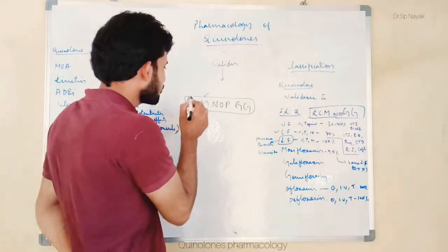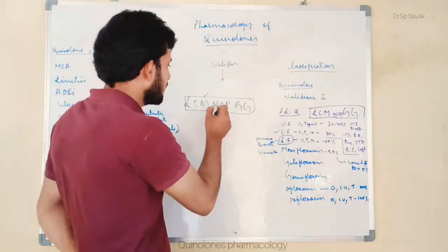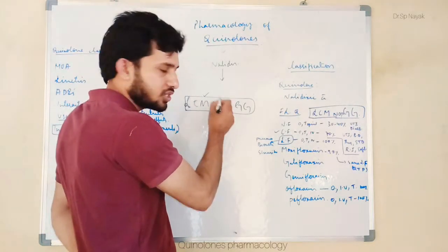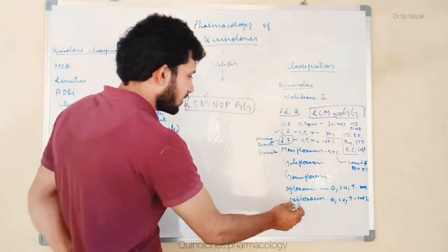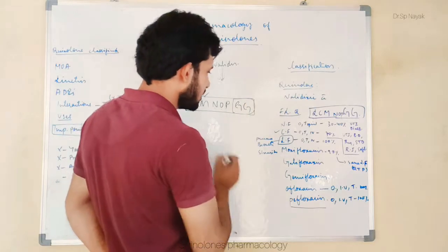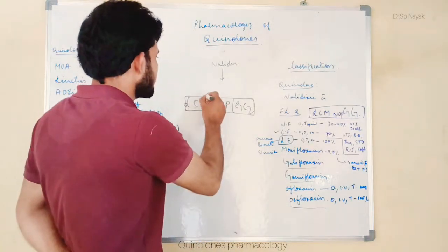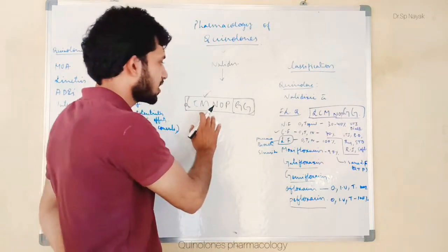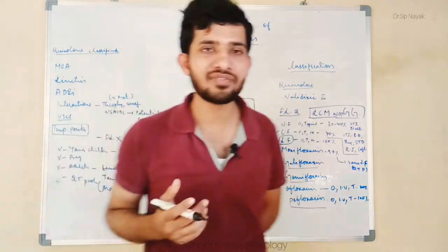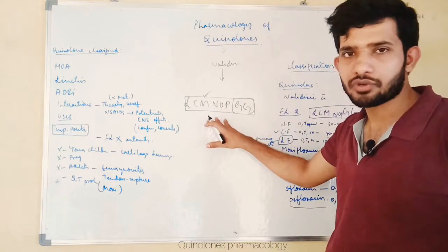Here L means levofloxacin, C means ciprofloxacin, M means moxifloxacin, N indicates norfloxacin, O means ofloxacin, P means pefloxacin, and the two G's indicate gatifloxacin and gemifloxacin. So this is the word you can memorize while remembering the classification of fluoroquinolones, and these all come under fluoroquinolones.